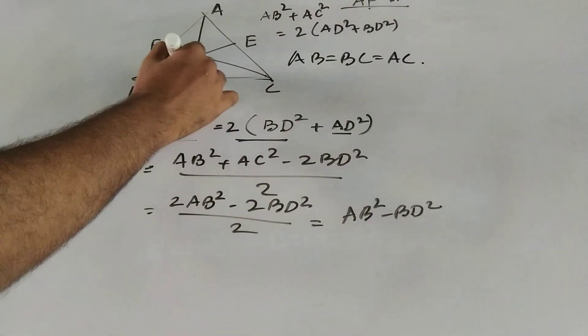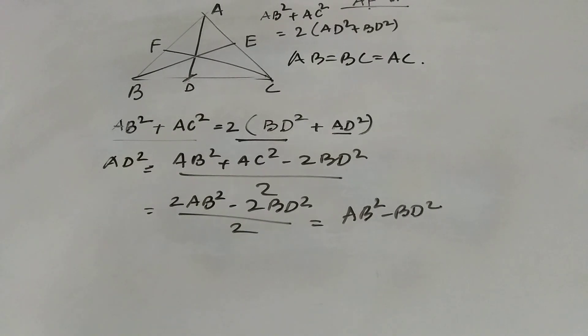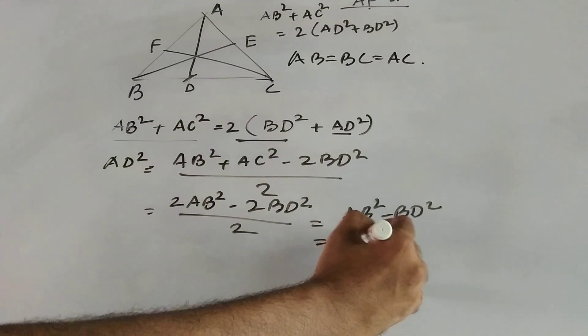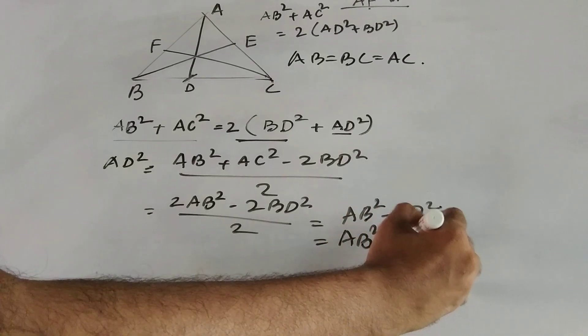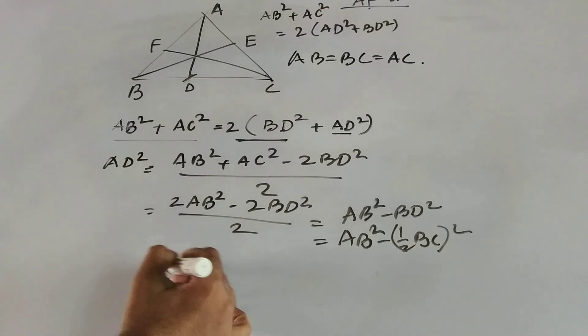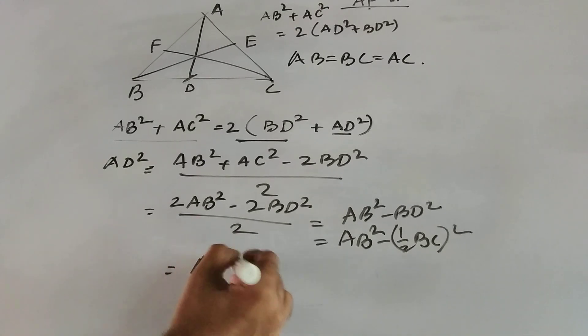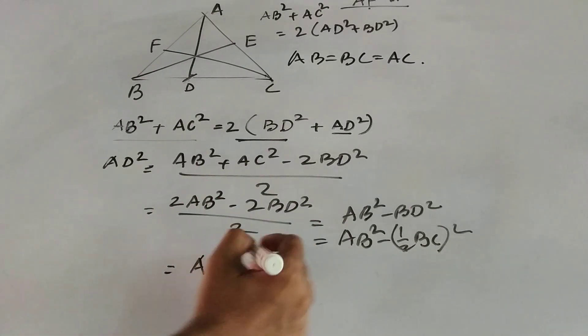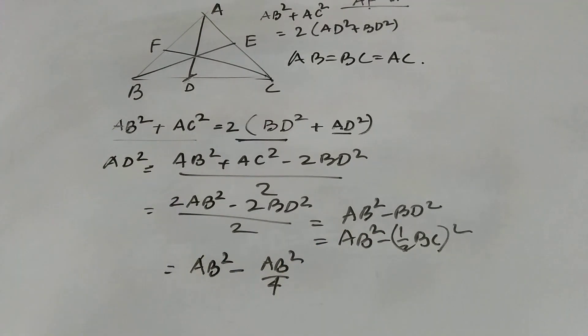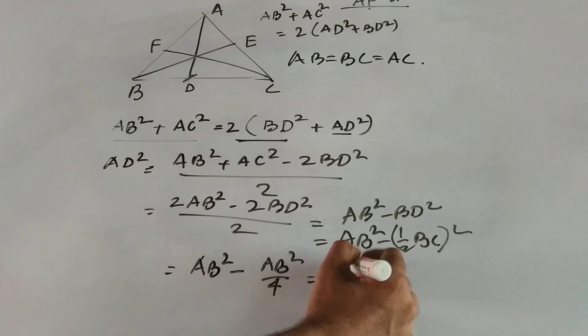Now what is BD? D is the midpoint of the base BC, so BD is nothing but half of BC. Half of BC whole square, which is same as AB square minus BC, same as AB. So it is AB square by 4. I have simply replaced BC by AB, which is 3 AB square by 4.